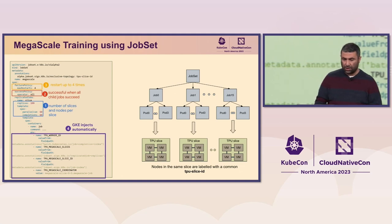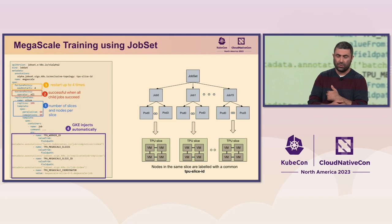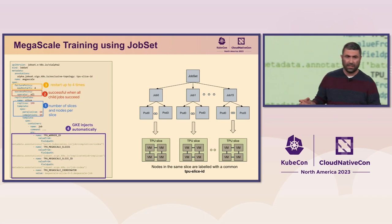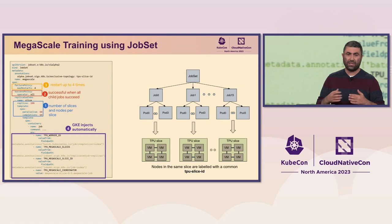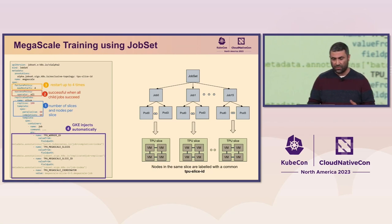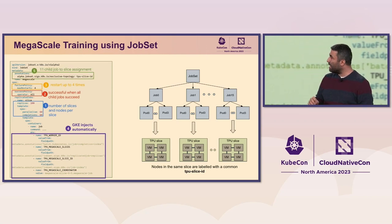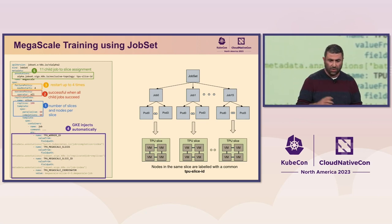There are also a bunch of environment variables you can set up. With JobSet, you get a number of labels and annotations injected into each job that gets created — like the index of each job — that makes it easy to map to lower-level frameworks as environment variables. One last thing still under development, which is why we only have it as an annotation and need to migrate it to a proper API, is exclusive placement.